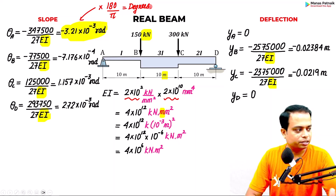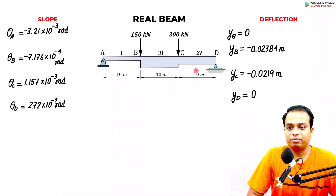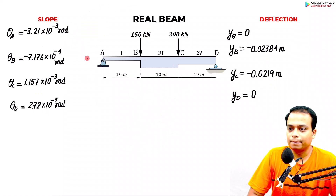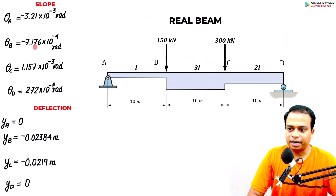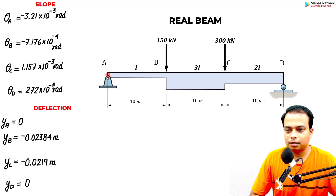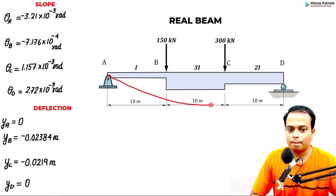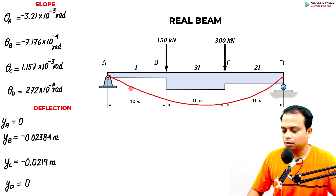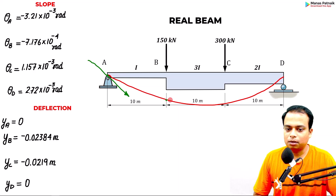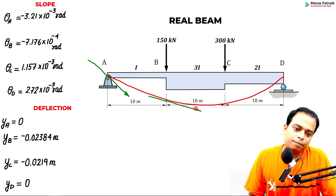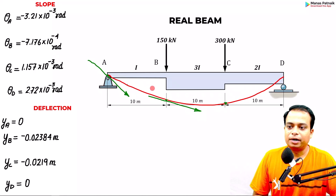These are the final values. From the data, slopes at A and B are negative — meaning the tangent is angled downward — while at C and D the slopes are positive, with the tangent lifting upward. Whenever you compute an answer, try to understand what the physical information it conveys. The slope values are θ_A, θ_B, θ_C, and θ_D.